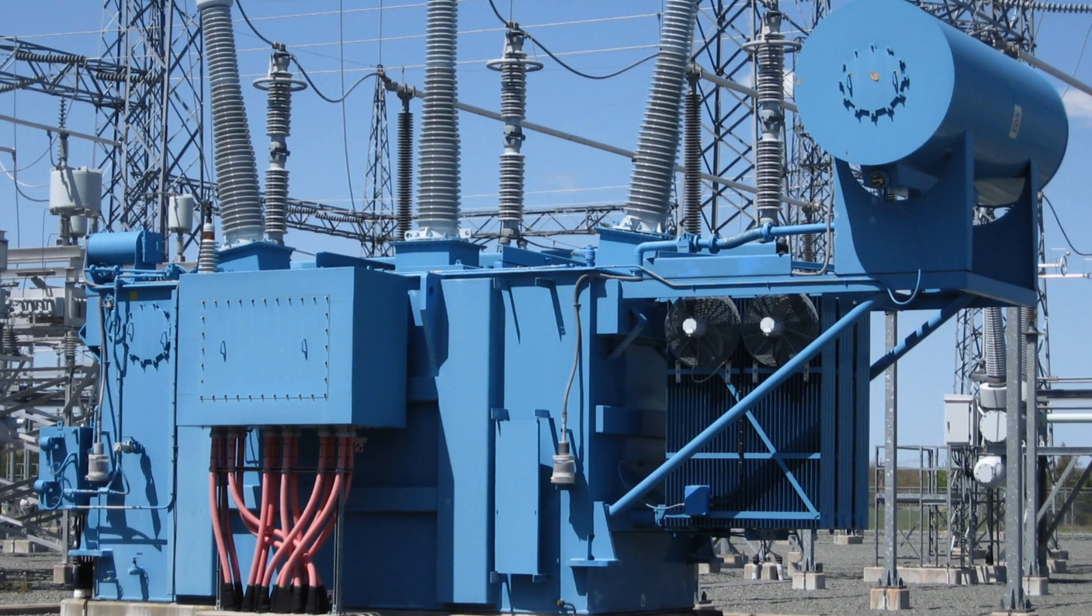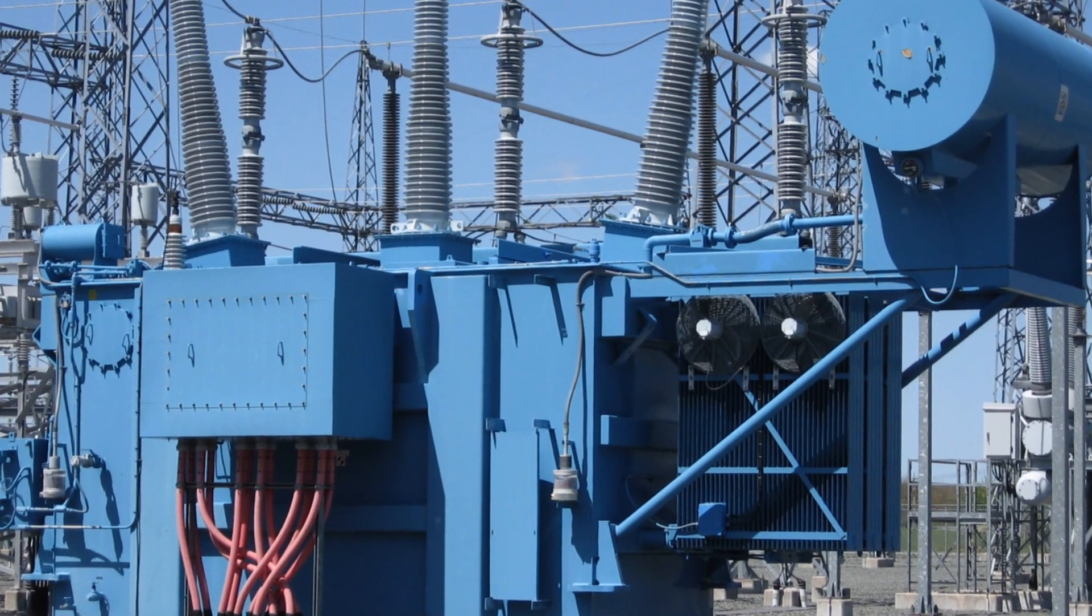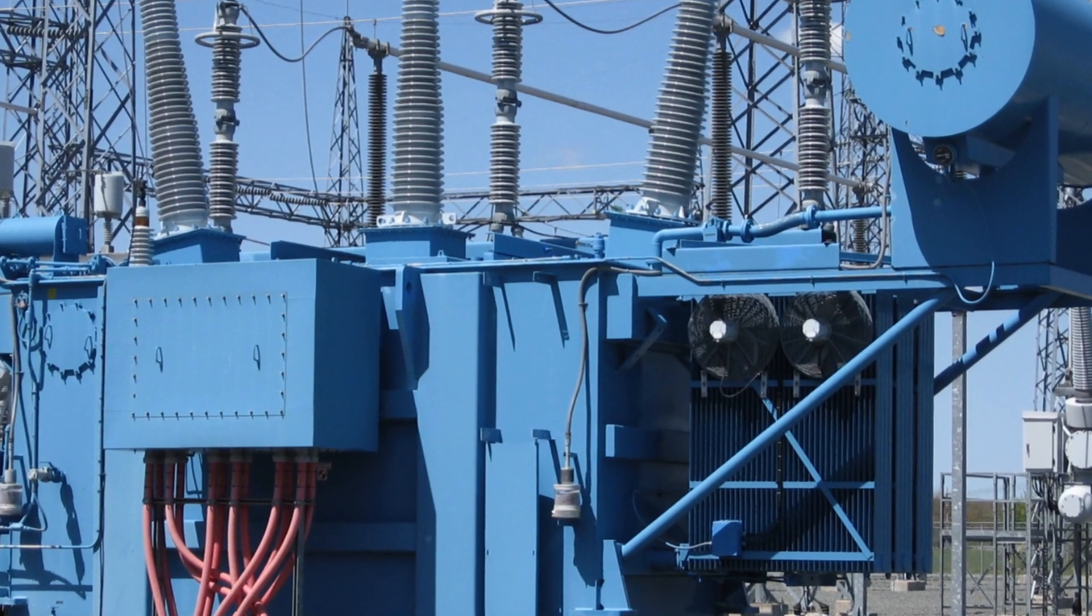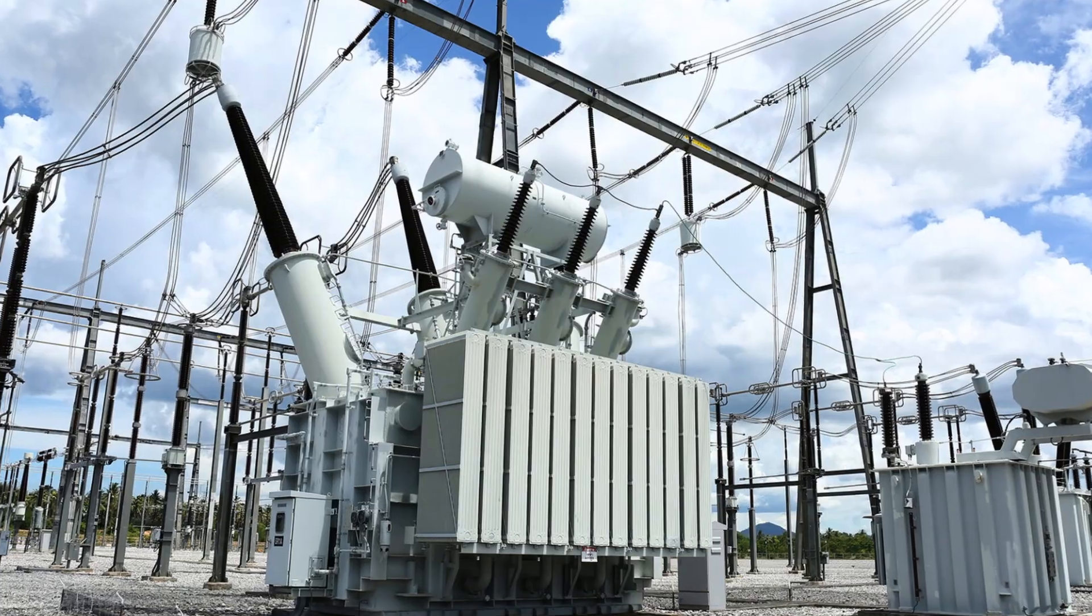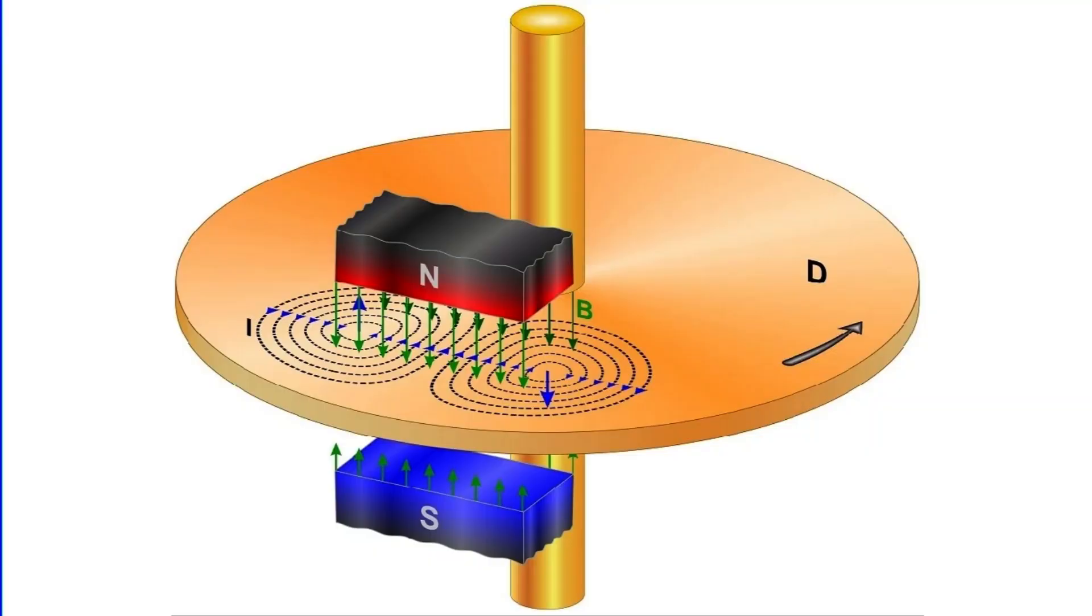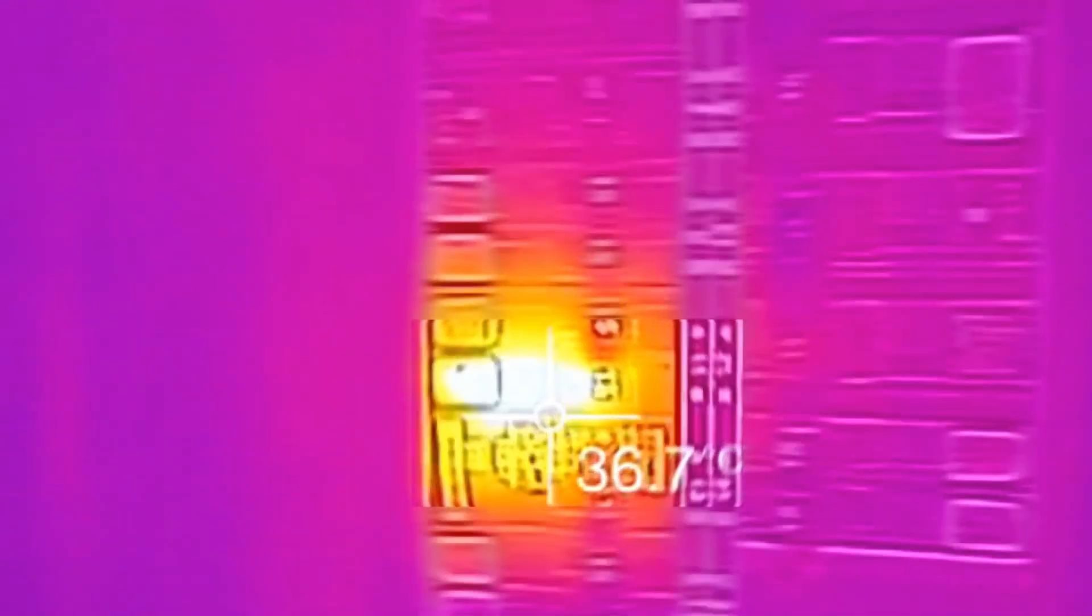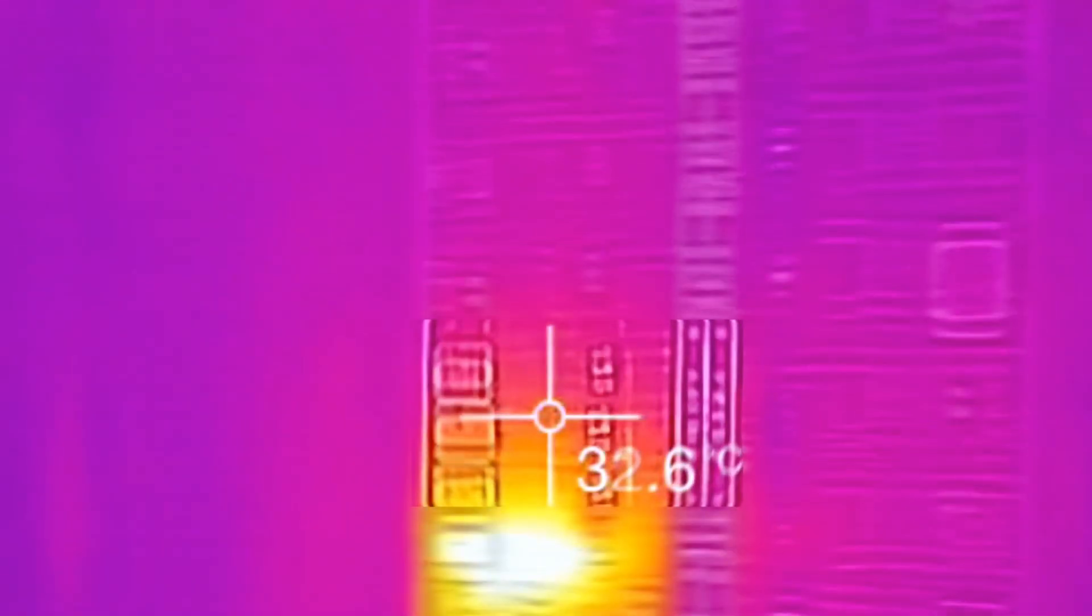Let's quickly summarize what we've learned today. A transformer is a device that transfers electrical energy from one circuit to another. Eddy currents are circulating currents induced within the transformer core due to changing magnetic fields. These currents can cause energy loss and unwanted electromagnetic interference.